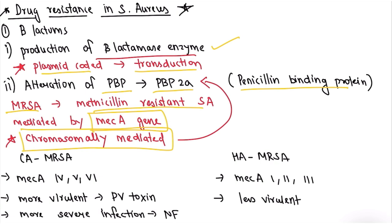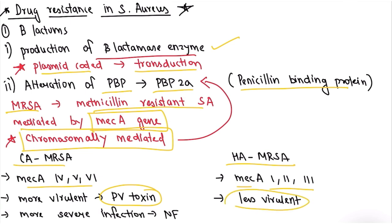The difference between CA-MRSA and HA-MRSA: CA-MRSA (community-associated) carries mecA 4 and 5, is more virulent due to production of PVL toxin, and causes severe infections like necrotizing fasciitis. HA-MRSA (hospital-acquired) carries mecA 1, 2, or 3, is less virulent, and can be prevented by regular hand washing in hospitals.